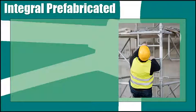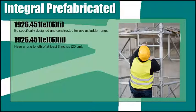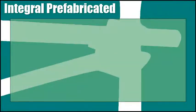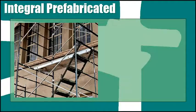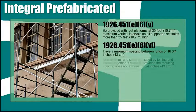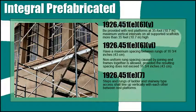Fabricated frame scaffolds are the most common type of scaffold because they are versatile, economical, and easy to use. Integral prefabricated scaffold access frames shall be specifically designed and constructed for use as ladder rungs and have a rung length of at least eight inches. They are not to be used as work platforms when the rungs are less than 11 and a half inches in length, unless each affected employee uses fall protection or a positioning device which complies with 1926.502. They must also be uniformly spaced within each frame section. Rest platforms shall be provided at 35-foot maximum vertical intervals on all supported scaffolds more than 35 feet high, and they shall have a maximum spacing between rungs of 16 and three-quarter inches. Non-uniform rung spacing caused by joining end frames together is allowed, provided the resulting space does not exceed 16 and three-quarters inches. The steps and rungs of ladder and stairway-type access shall line up vertically with each other between the rest platforms.